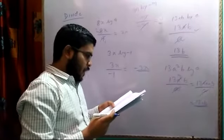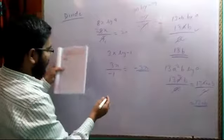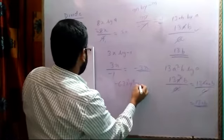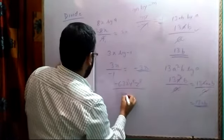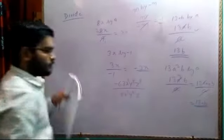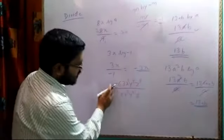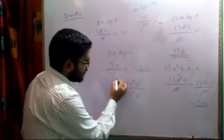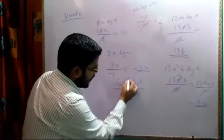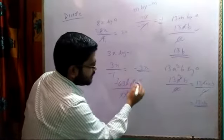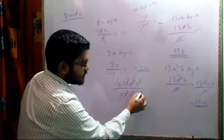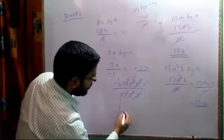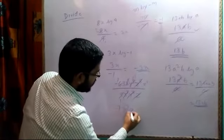Now a bigger example: minus 63x³y⁵z⁸ divided by 9x³y²z. Constants: 9 sevens are 63, so we get 7 with a minus sign. x cube divided by x cube cancels. y⁵ divided by y² leaves y³. z⁸ divided by z¹ gives z⁷. Therefore the answer is minus 7y³z⁷.